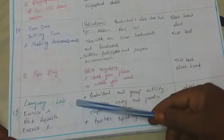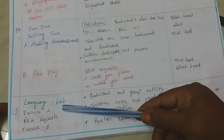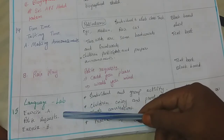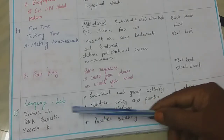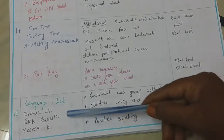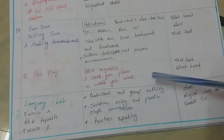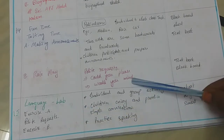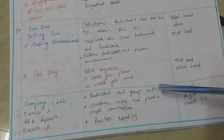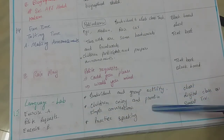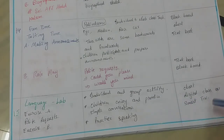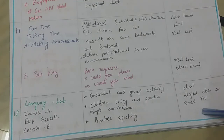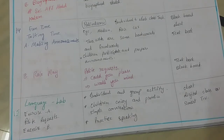In period 15, it is the language lab. We have exercise A — polite requests — and exercise B. We give practice for polite requests. It is an individual and group activity where children enjoy and practice simple conversations and speaking. TLM: chart, digital class or smart TV or video clips.